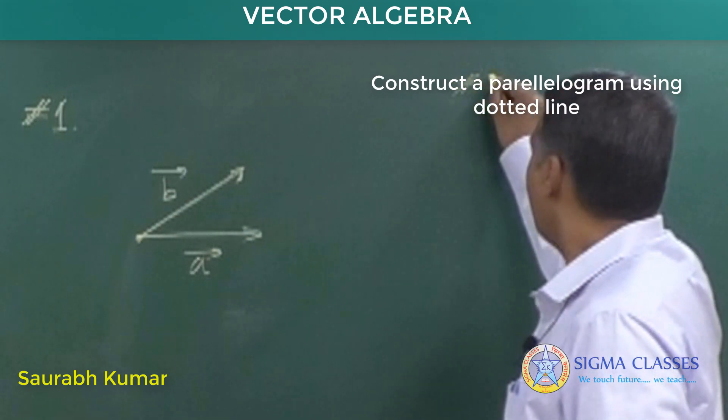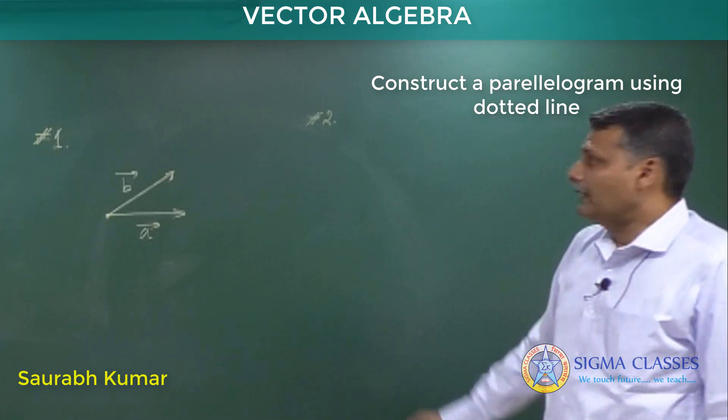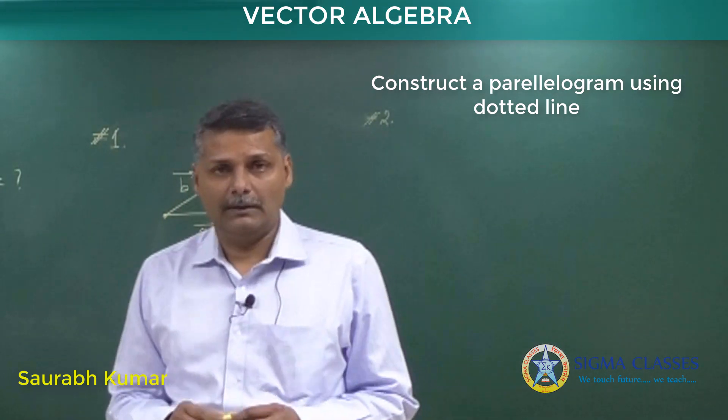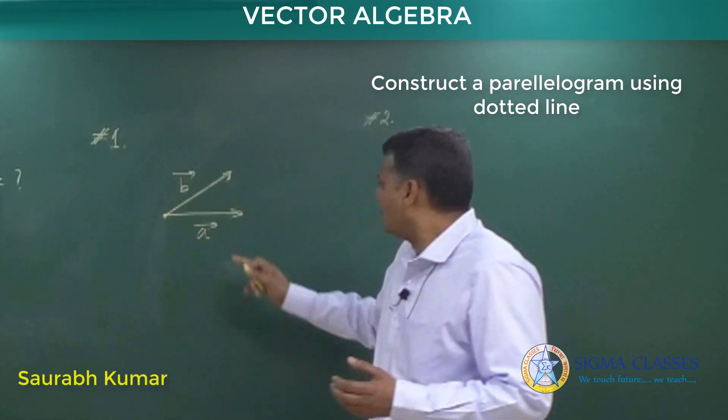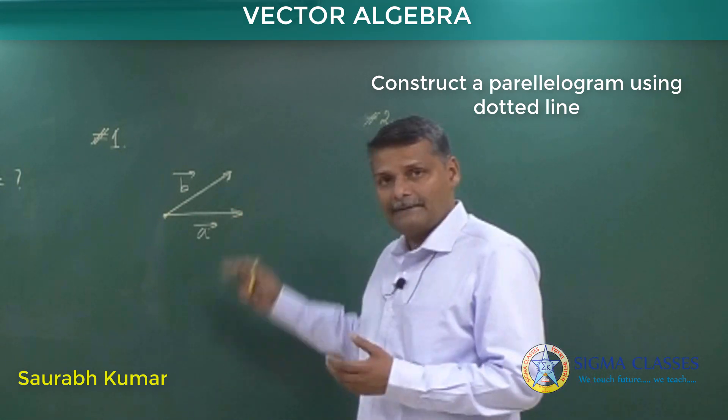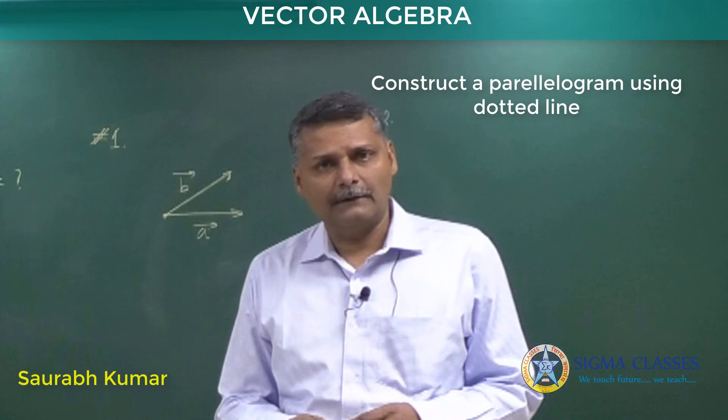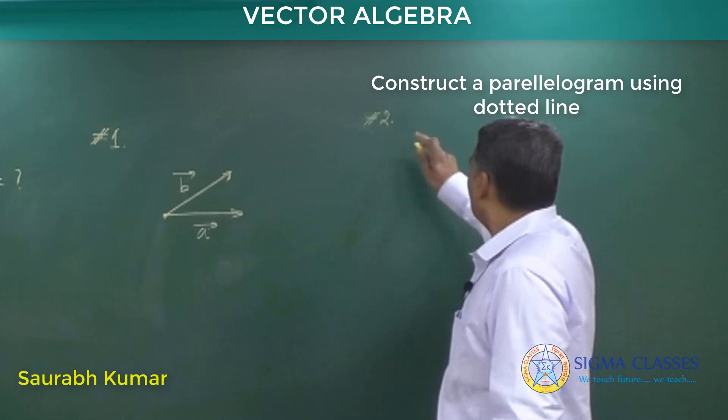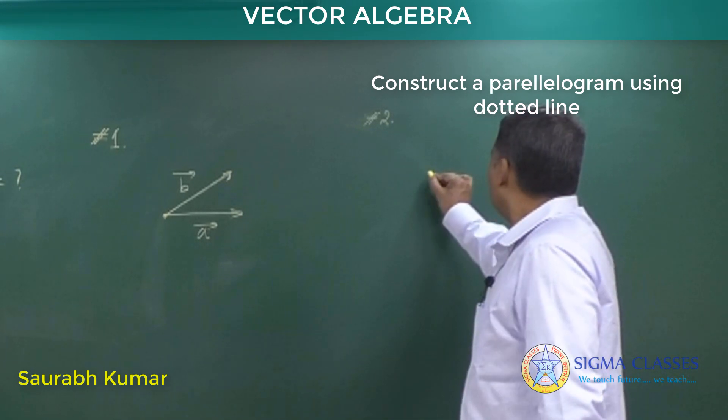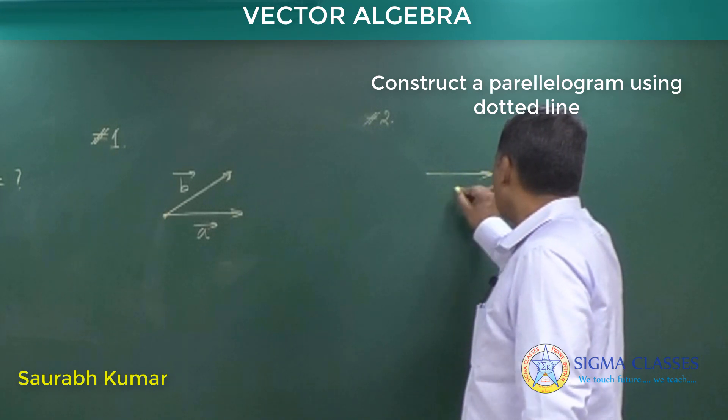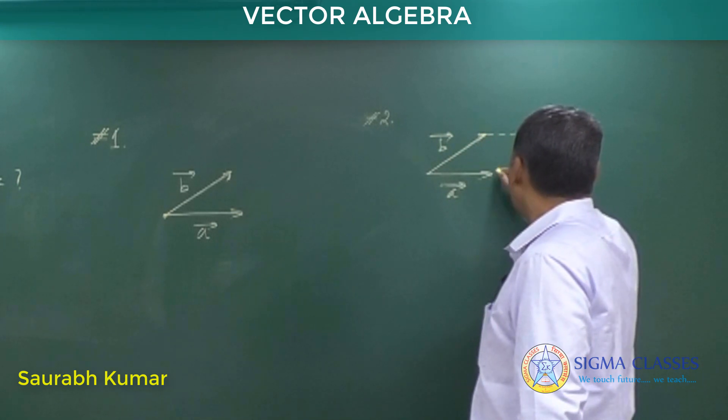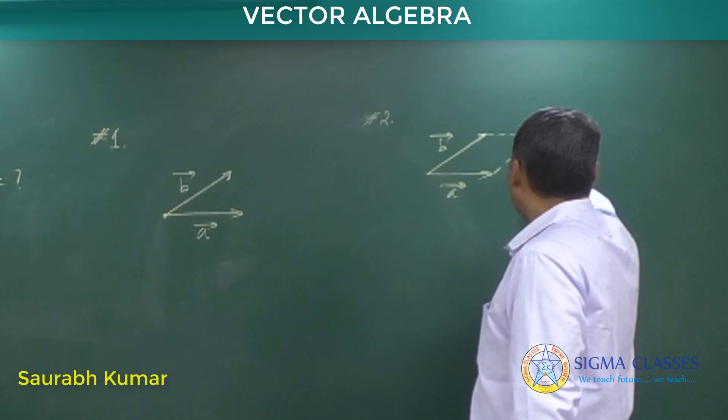In step 2, construct a parallelogram with help of dotted line. From geometry, you know if two line segments are given, you can easily construct a parallelogram. So construct a parallelogram using dotted line. Let me implement that: A and B, step 1. Step 2, construct a parallelogram using dotted line.